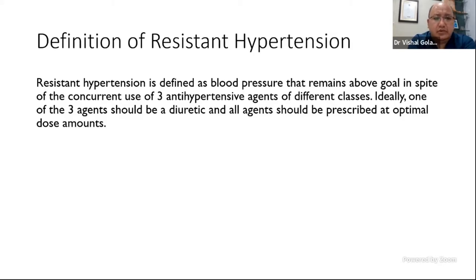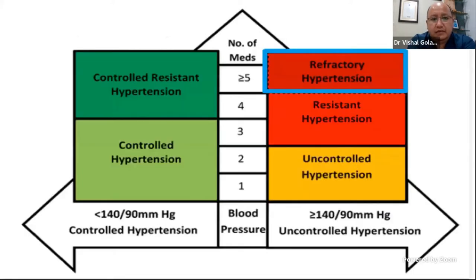There are various reasons for that. We can also define resistant hypertension as hypertension which needs four or more drugs for control. To divide this simply: uncontrolled hypertension requires at least three drugs. If we manage to control blood pressure with four medicines, it is controlled resistant hypertension. If we need five or more drugs, this is a subcategory known as refractory hypertension — it is not controlled with the basic drugs.